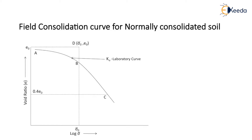Once a sample from the field is extracted, the void ratio of the sample remains constant, but the effective overburden pressure of the sample reduces gradually from sigma naught bar to E0. This process is represented by line E0. In the laboratory curve, the portion AB represents the recompression curve because it represents effective pressure below the actual initial pressure in the field.